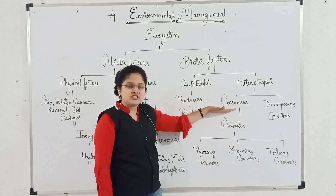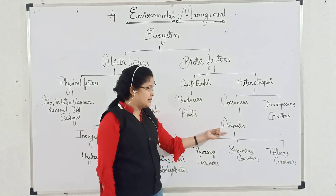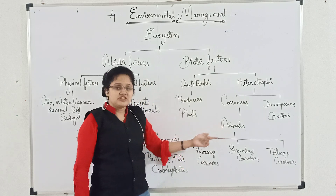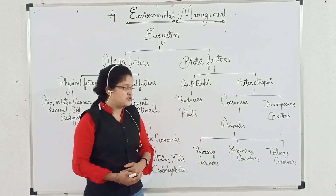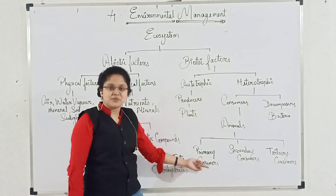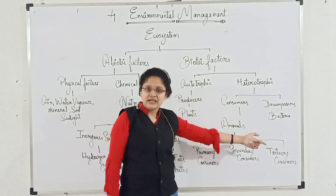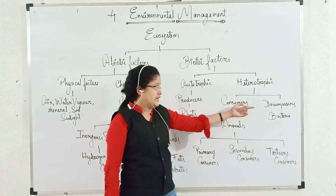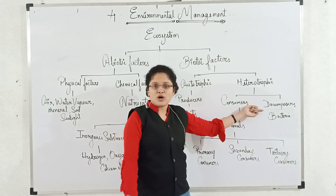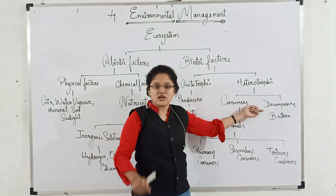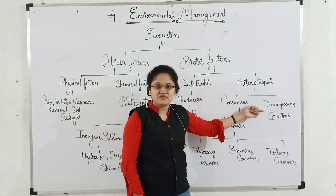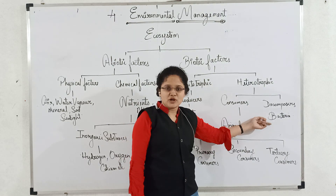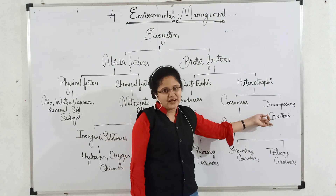Which are the examples of consumers? Animals. Animals are examples of consumers, which are further classified into primary consumer, secondary consumer, and tertiary consumer. Decomposers are called so because they decompose the dead body of the apex consumer. The examples of decomposers are bacteria and fungi.